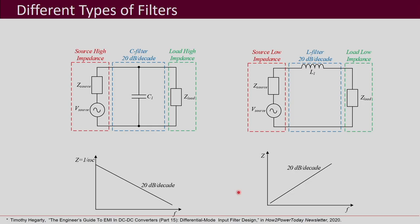Designing the filter means choosing the values of C_x, C_y, L_CM, and L_DM. Those values can be chosen by analyzing these equivalent circuits. Let us see what could be the different types of filters that can be used as EMI filters.